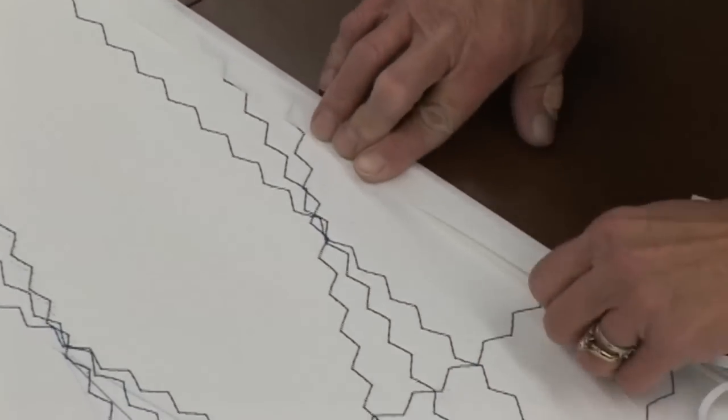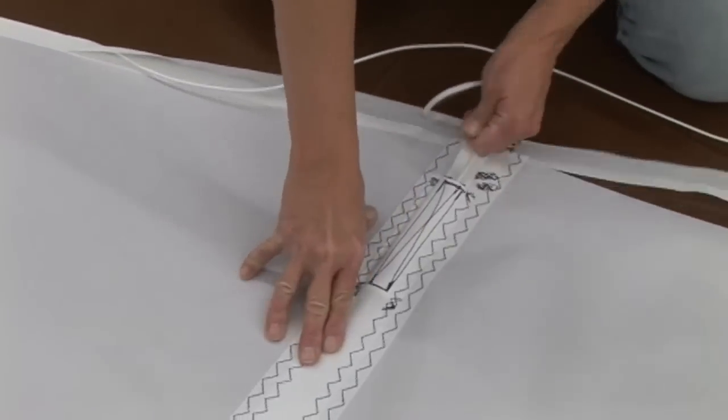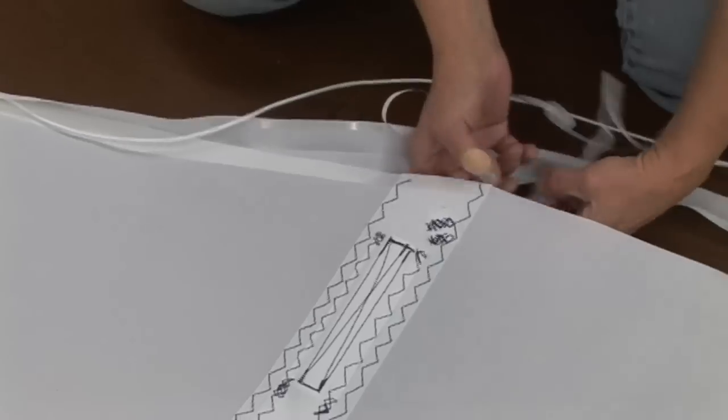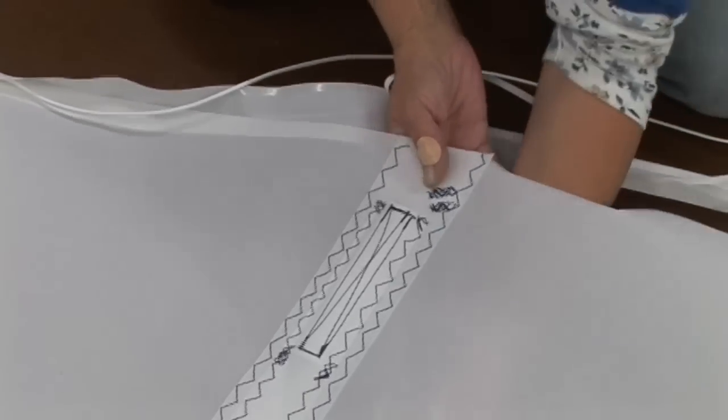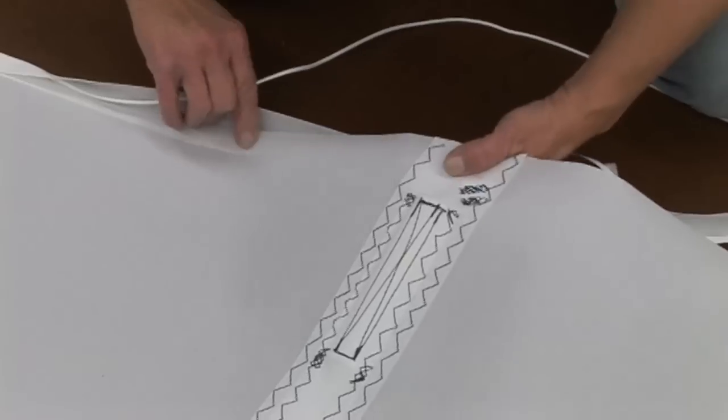As we continue to baste this Dacron tape over the leach, we'll want to be sure that the leach line is sandwiched into the fold that we created in the tape. And we definitely want to pull out any of those webbing straps if you've inserted them into the pocket. And then lay them so they lay underneath the sail.